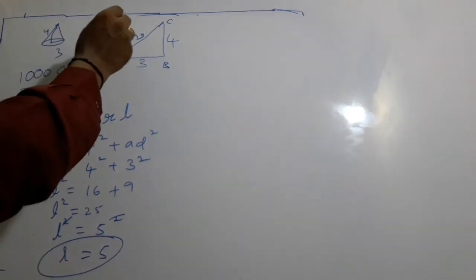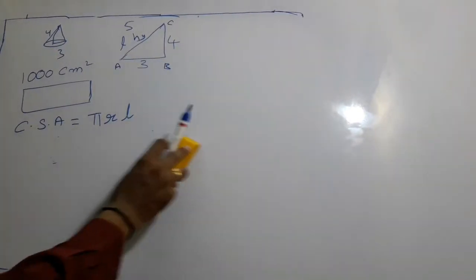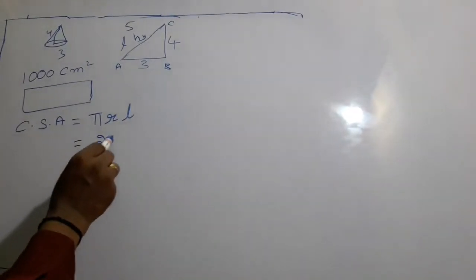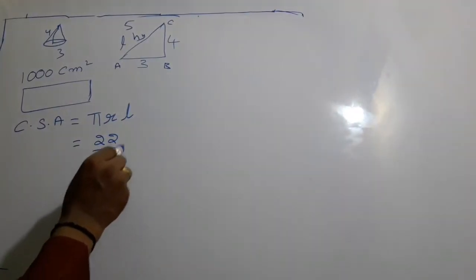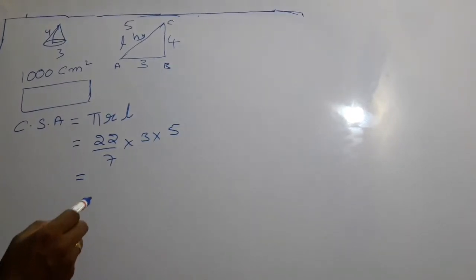So the slant height is 5. Now we will calculate the curved surface area of a cone. The formula is πrl: (22/7) × radius 3 × slant height 5.